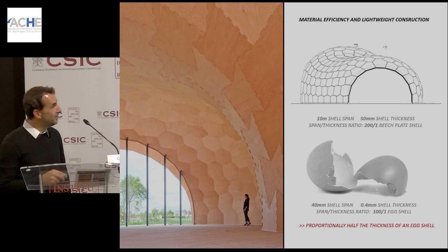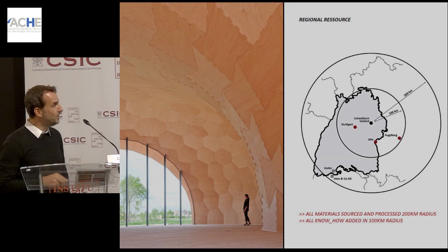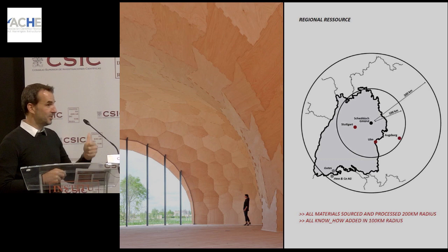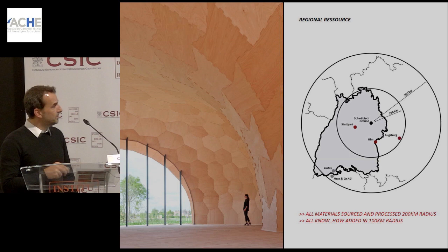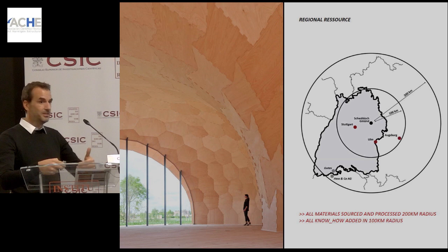In proportion, a 50mm beech plywood shell spanning 10 meters is around half the thickness of an eggshell, even at this scale. Another important aspect is that this is truly regional architecture — all the building material used for the timber shell was grown, processed, and assembled within a 200km radius, with all the know-how added within a 100m radius. That's not only important from an environmental point of view but also socially, because all the value is added where you build the building.